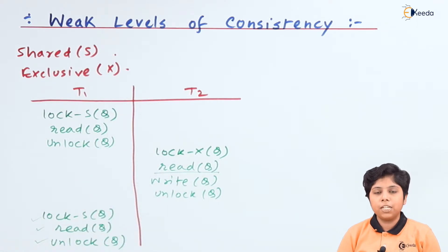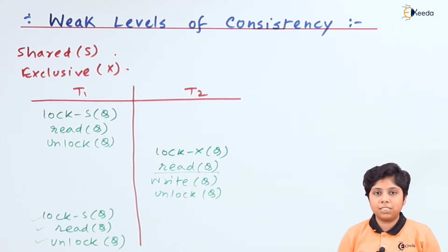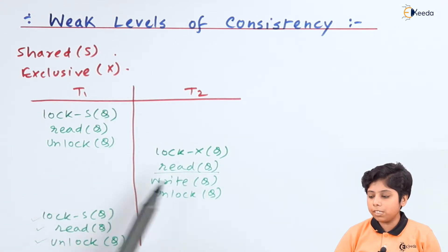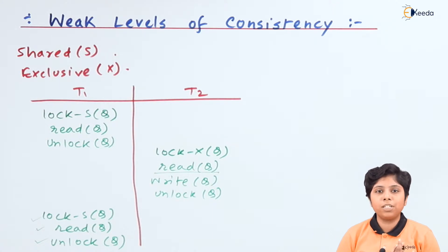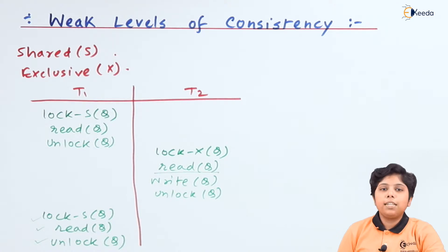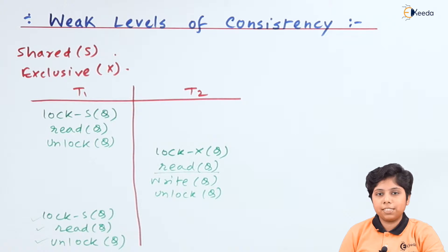This schedule is also not at the read committed level because there is a read from T1 both before and after a write by T2. So it provides only a Degree 2 level of consistency using shared and exclusive locks — it is not serializable, not repeatable read, and not read committed. This is known as Degree 2 level of consistency.